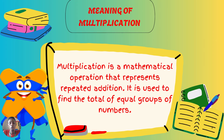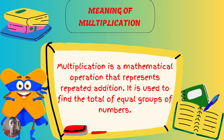It represents repeated addition — you keep on adding numbers together. For example, two plus two plus two gives you six. Multiplication works hand in hand with addition, just like division works with subtraction. So multiplication is essentially another form of addition, used to find the total of equal groups of numbers.